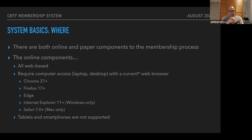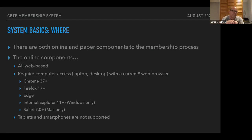As for where: there are both online and paper components to the membership process. The online components are all web-based, so they all require a computer with a web browser. Beyond that, the requirements are pretty basic — it doesn't need to be a super modern computer or browser, but it definitely needs to be a computer or laptop. Smartphones just won't work because there's too much information on the screens. You might be able to use a tablet, but it would be hard to do all the typing and work involved. Best to have an actual computer with a relatively modern web browser.